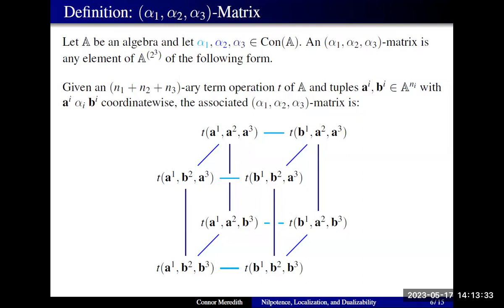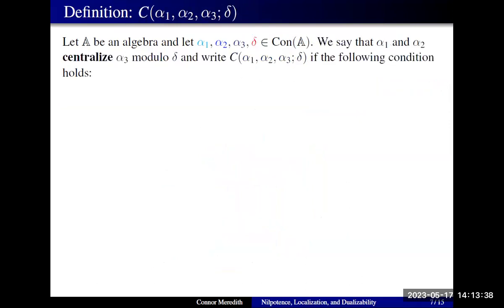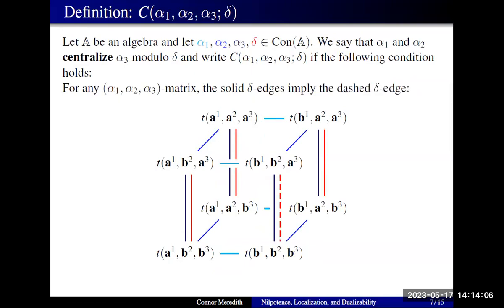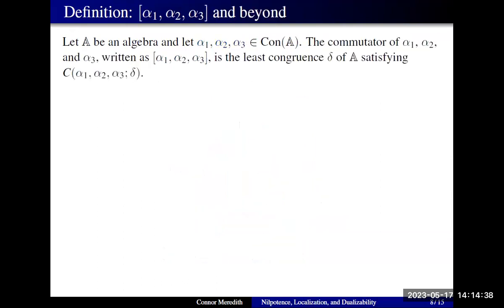We can use these objects to define a centralization relation. Given three congruences alpha-1, alpha-2, alpha-3 and a congruence delta, we'll say that alpha-1 and alpha-2 centralize alpha-3 modulo delta if a certain condition on alpha matrices holds: for any alpha matrix, if certain pairs in the matrix are delta-related, then another pair is delta-related. There will always be at least one delta satisfying this — namely the meet of alpha-1, alpha-2, and alpha-3. And if you take meets of satisfactory deltas, you get another satisfactory delta.